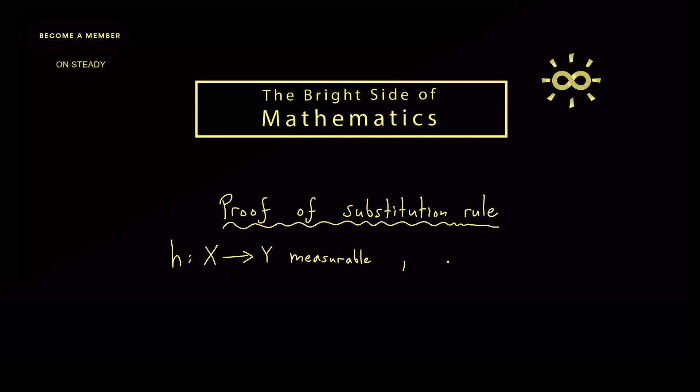And with this we have considered a measurable function defined on Y and called g, so with values in R, which should also be integrable with respect to our image measure here. And with this we have the following substitution formula.